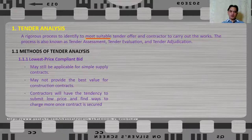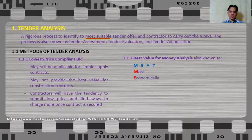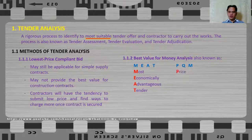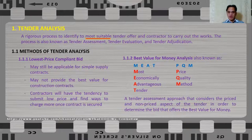Another method to analyze the tender is what we call the best value for money analysis, also known as MEAT — Most Economically Advantageous Tender. This is also known as PQM, or Price Quality Method of analysis. It is a tender assessment approach that considers both the price and non-price aspects of the tender to determine the bid that offers the best value for money.